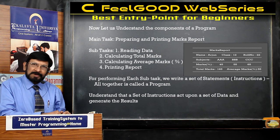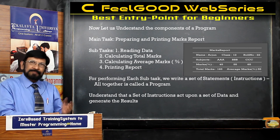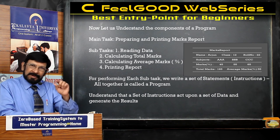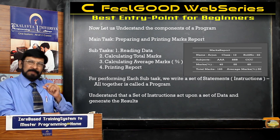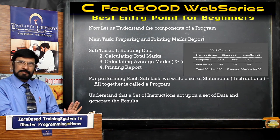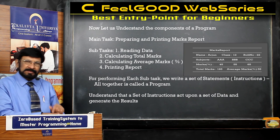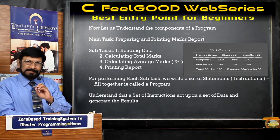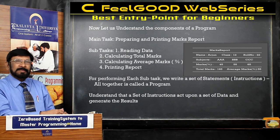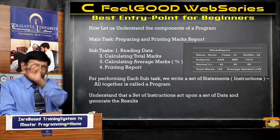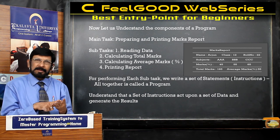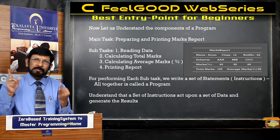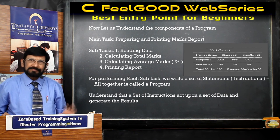Thereafter, calculating total mark — that is one subtask. Calculating average mark and percentage — that is another subtask. These are to be performed. Finally, what is the last subtask? Printing the report — writing the report on the screen. Totally with eight data items the report is printed. So the subtasks are: reading data, calculating total mark, calculating average mark and percentage, and writing the report on the screen — simply printing the report.